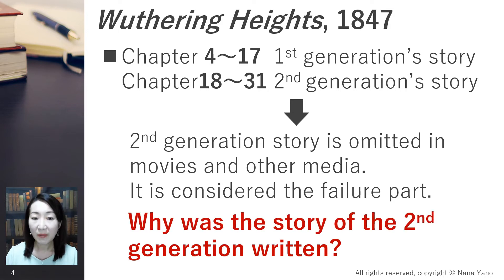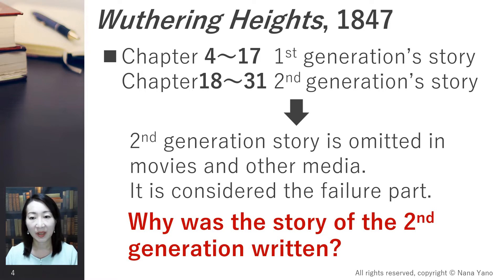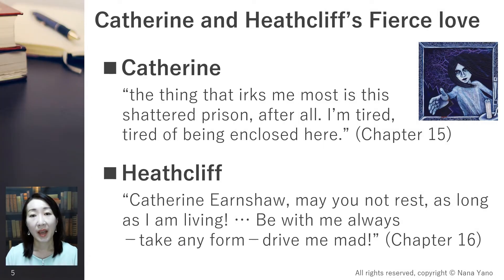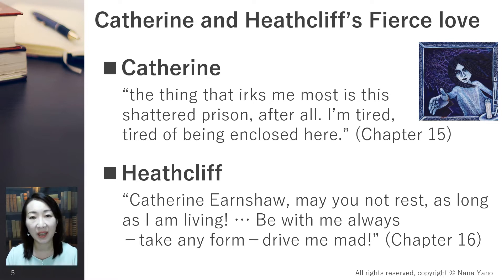Why was the story of the second generation written? The key person is Heathcliff, who becomes a revenge demon. After Catherine gets married, Heathcliff reappears before her, and Catherine can no longer stand the status quo, unleashing the following line.